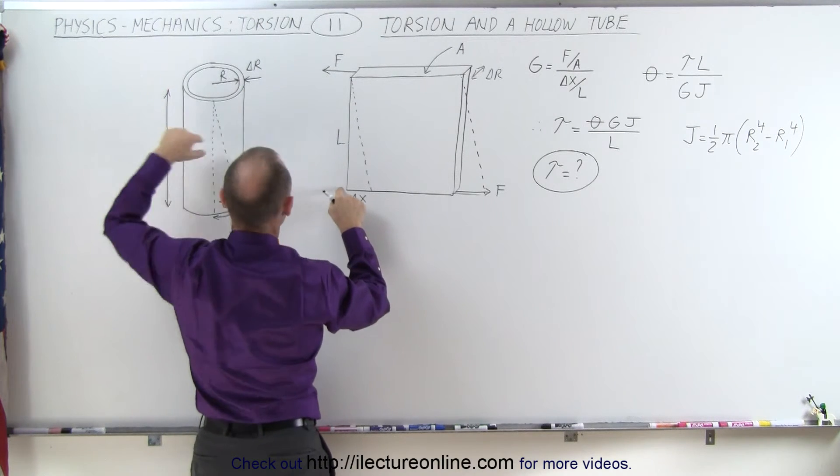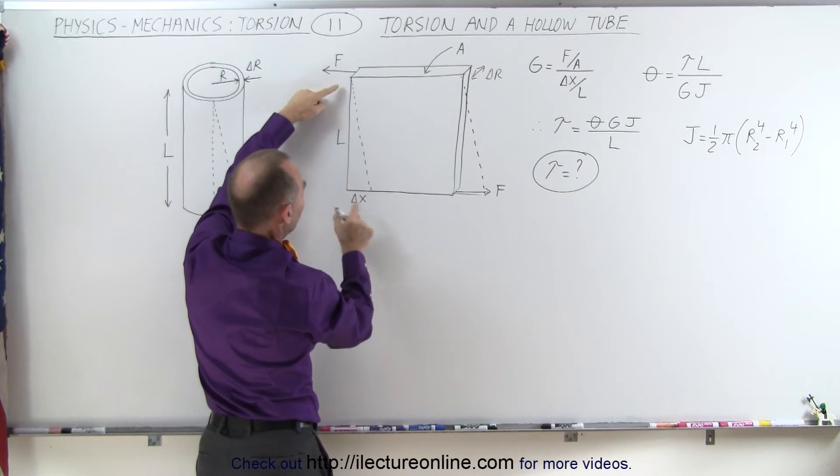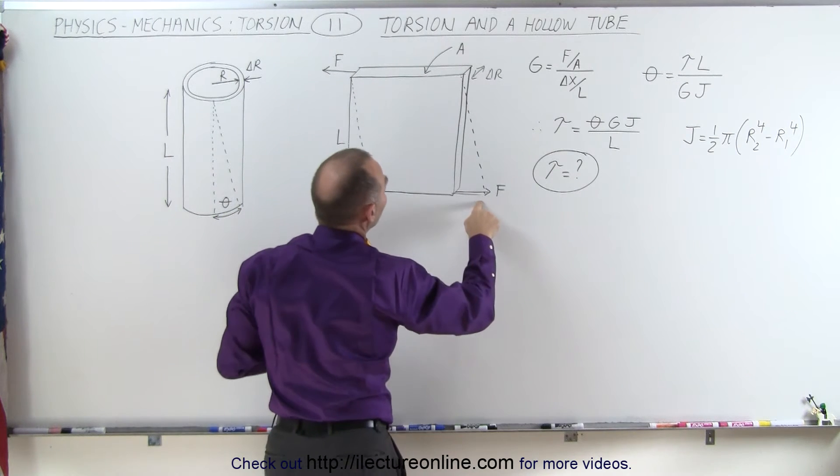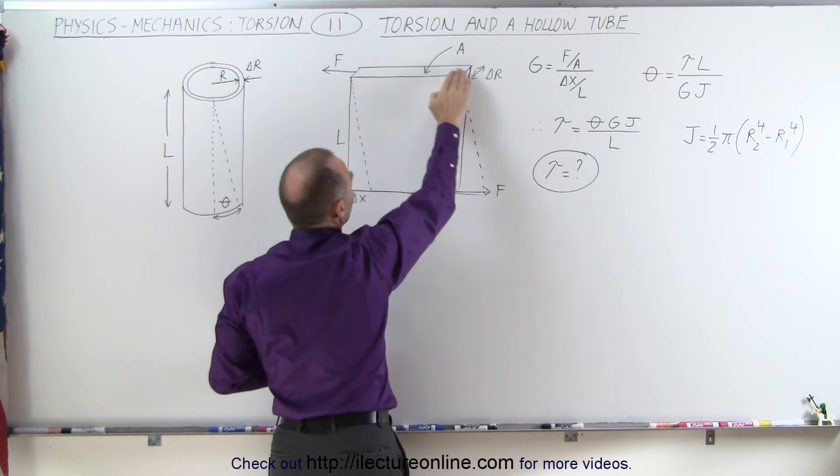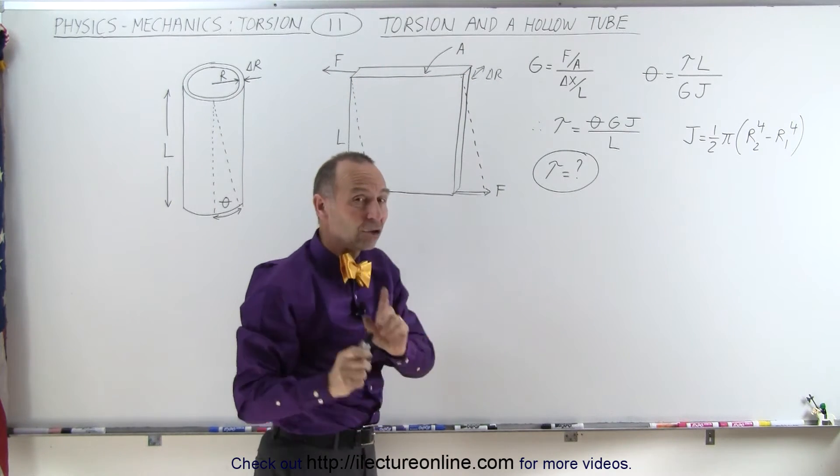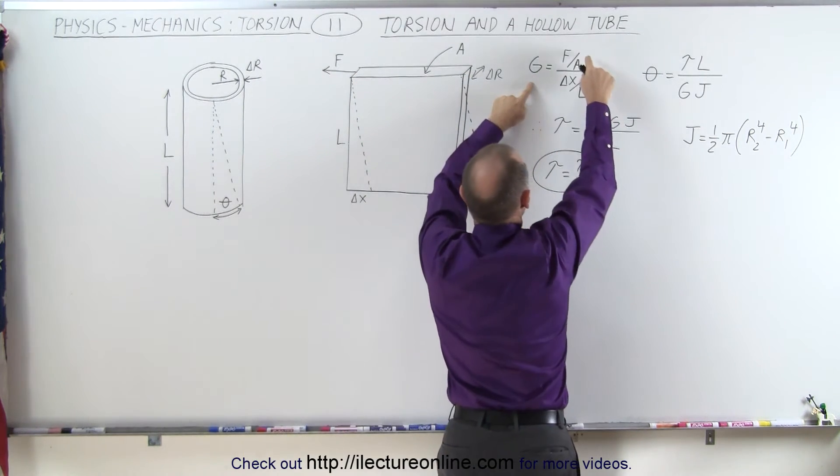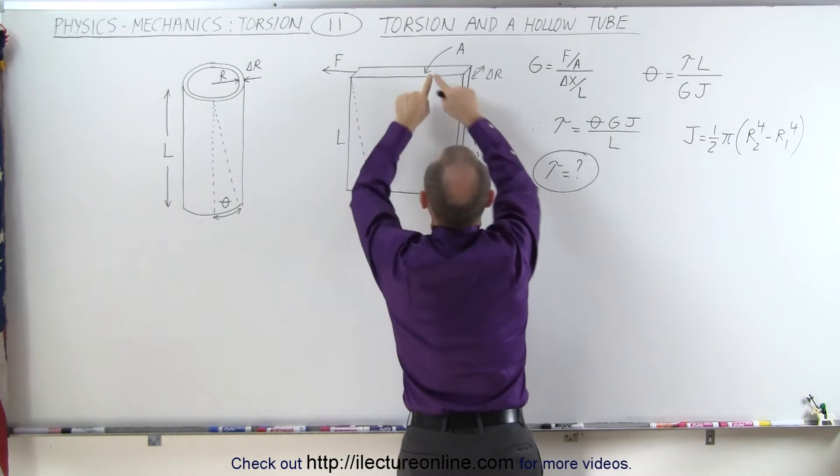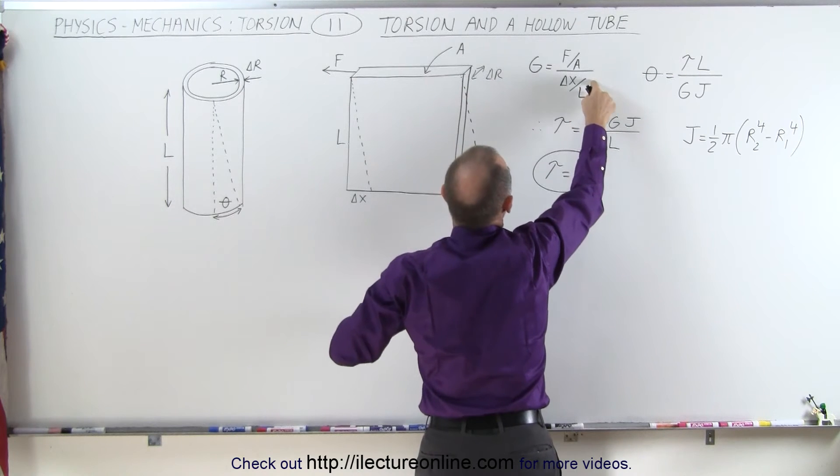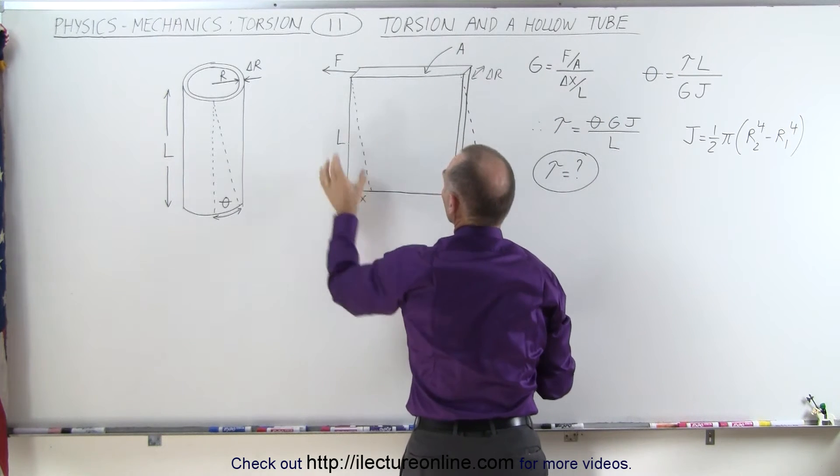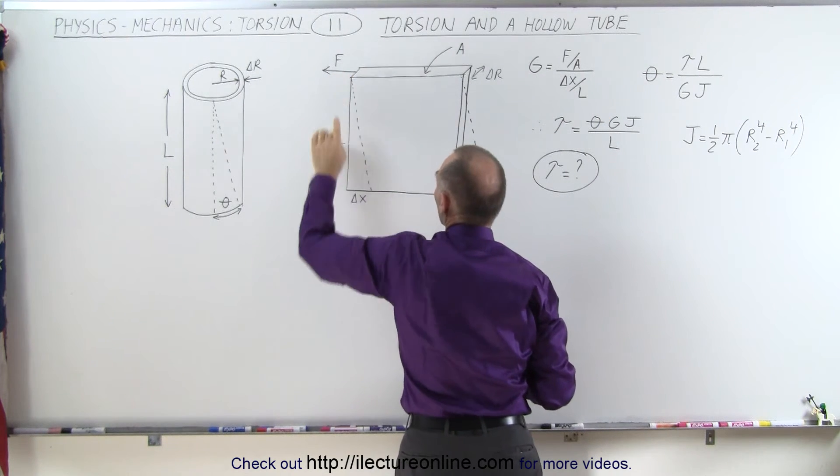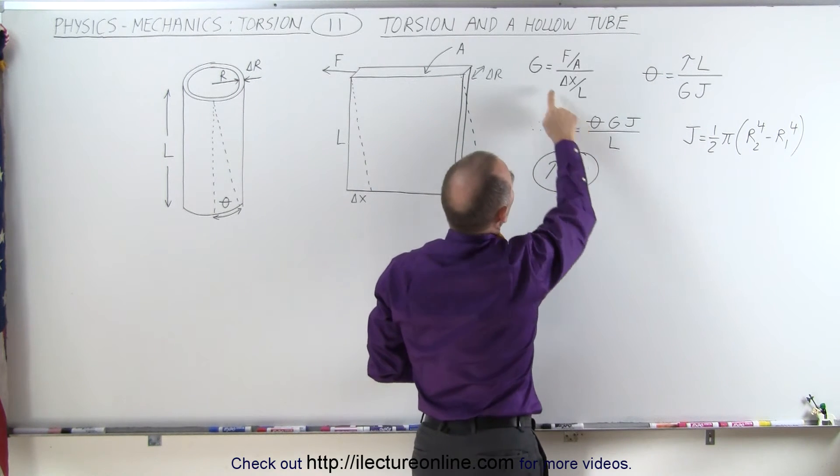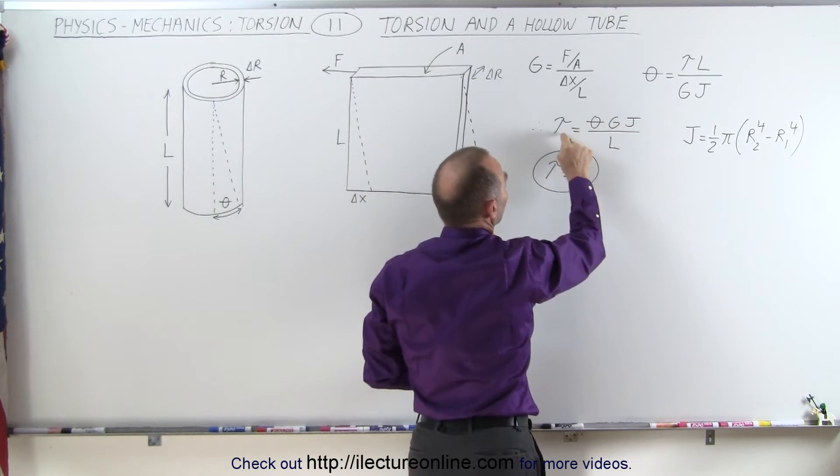Knowing the length here of the tube, which is the height of the block right here, and knowing the deformation delta x, knowing the force that we apply, and knowing the cross-sectional area at the top, we can see that the shear modulus can be calculated by taking the stress divided by the strain. The stress is the force divided by the area at the top here, and the strain is the deformation delta x divided by the height here, which we call L. So once we calculate that, we can plug that g into our equation right here to find the torque.